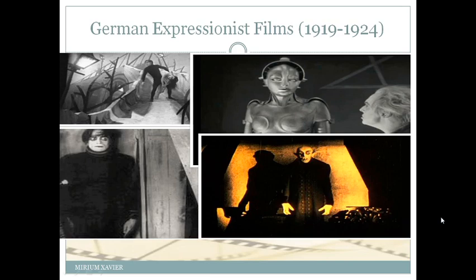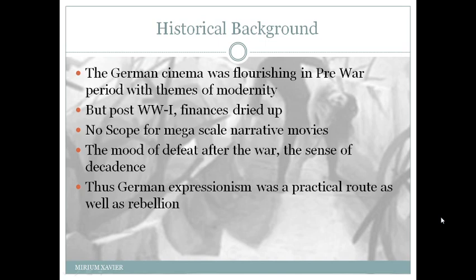German Expressionist films were made mainly between 1919 and 1924. Key films include Nosferatu and The Cabinet of Dr. Caligari. The German cinema was flourishing in the pre-war period with themes of modernity, but after World War One the finances for film started drying up. There was no scope for making mega-scale narrative movies. Along with that, there was a mood of defeat — a sense of decadence, disappointment, and disillusionment — which crept into the film industry, and thus German Expressionism became a practical and rebellious route.